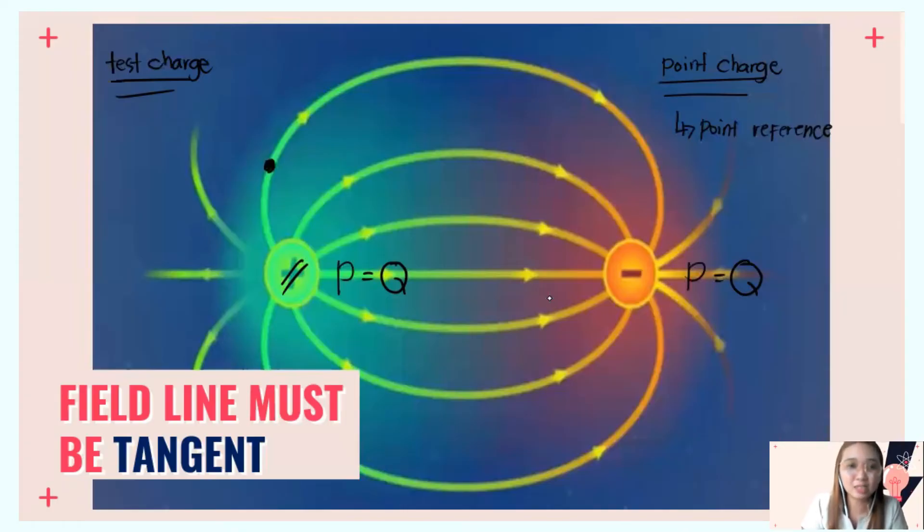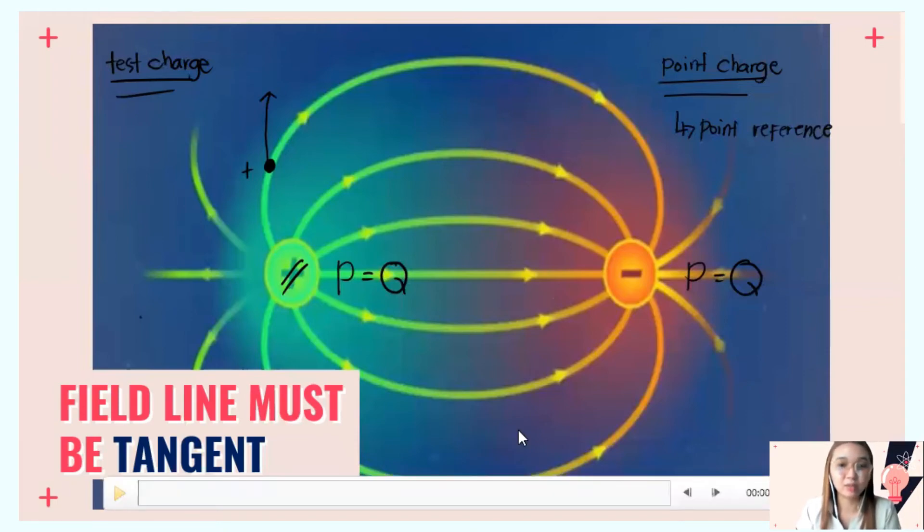If the test charge moves away from the point charge, meaning it repelled, you'll know the value—positive or negative—of your point charge using the test charge. That's why it's called test charge. The field line of the test charge with respect to a point charge is always tangent.